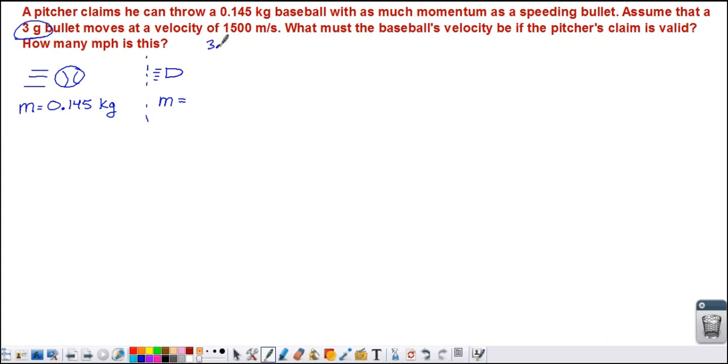So I need to do a little conversion. 3 grams. I know there are 1,000 grams in 1 kilogram. So 3 divided by 1,000 is 0.003 kilograms.